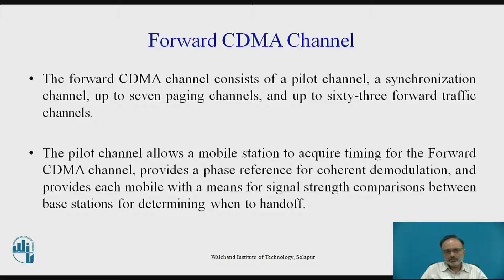The Forward CDMA Channel consists of seven paging channels including the Pilot Channel, Synchronization Channel, and up to 63 Forward Traffic Channels. The Pilot Channel allows the Mobile Station (MS) to acquire timing for the Forward CDMA Channel. It provides a phase reference for coherent demodulation and provides each mobile with a signal strength comparison with the base station for determining when to handoff.